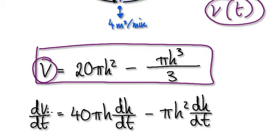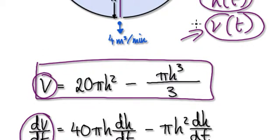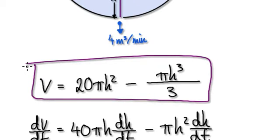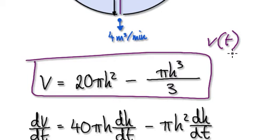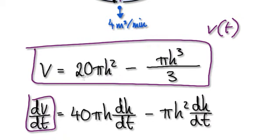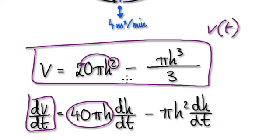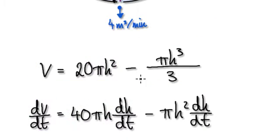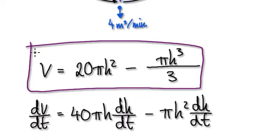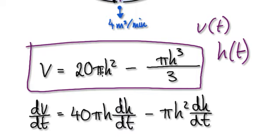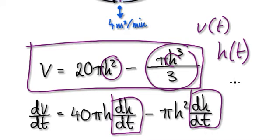So now let's differentiate this. Differentiate v — that will give you dv/dt, because v is a function of time. Remember, we are differentiating with respect to time. Because v is a function of time, we need to get dv/dt. Now differentiate the whole right-hand side with respect to time. Because h is a function of time, we need to include dh/dt here.